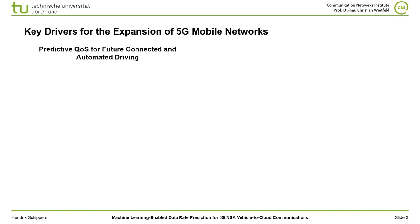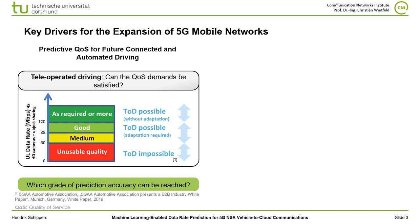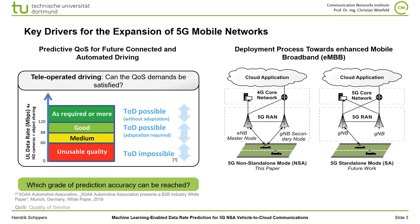On the one hand, new applications demand for an increasing data rate. On the other hand, some of these new applications demand for data rate guarantees or in-advance data rate predictions. One example for such an application is the so-called teleoperated driving, which means the remote control of vehicles by a distant driver. As shown in this figure, high data rates need to be satisfied all the time to safely enable teleoperated driving. To prevent sudden emergency brakings, the feasibility of teleoperated driving needs to be predicted in advance as accurately as possible.